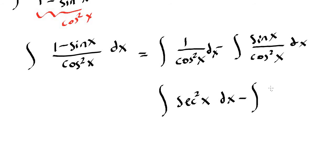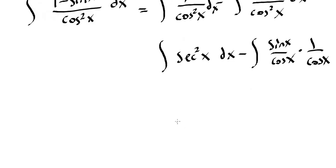So we can rewrite it as sine x over cosine x times 1 over cosine x. Sine over cosine is the tangent function and 1 over cosine is the secant function.